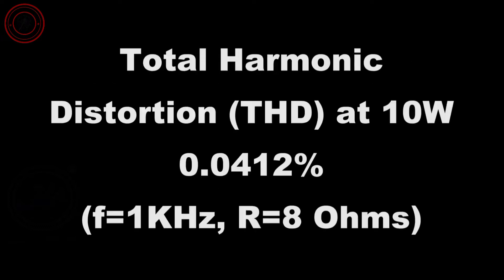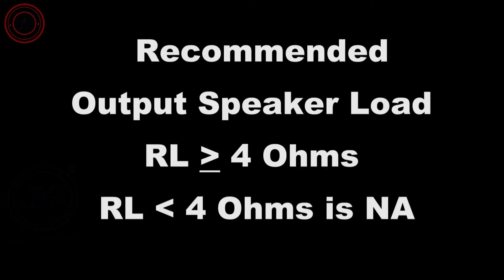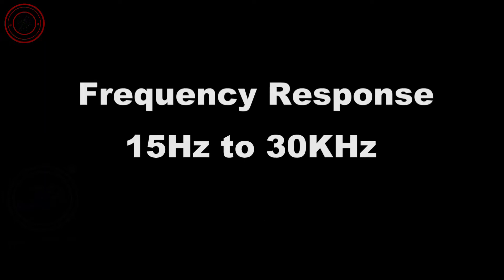Total harmonic distortion, THD, at 10 watts is 0.0412%, at the frequency of 1 kilohertz and with load impedance of 8 ohms. Recommended output speaker impedance must be greater than or equal to 4 ohms. Less than 4 ohms speaker impedance is not applicable. Frequency response is from 15 hertz to 30 kilohertz.